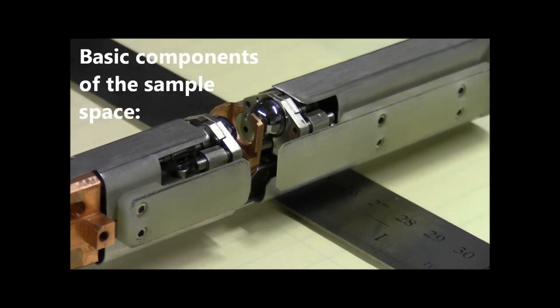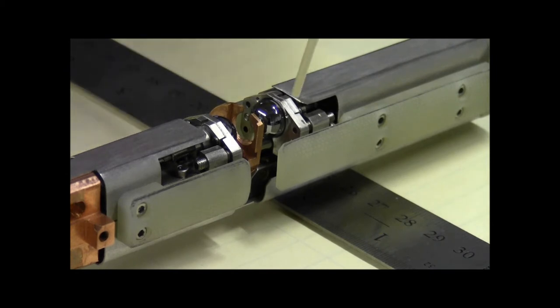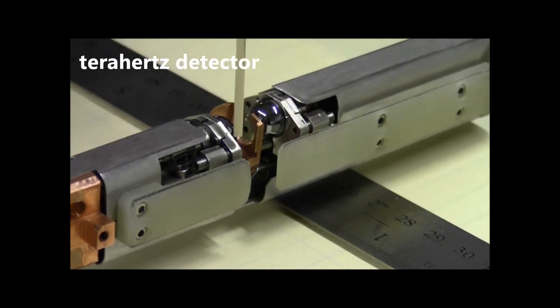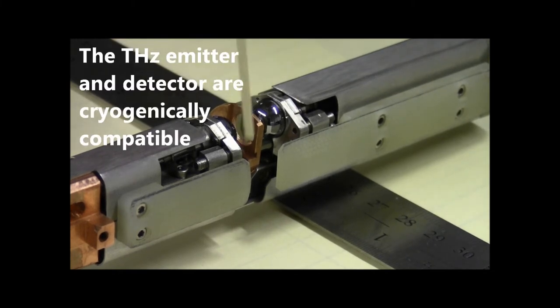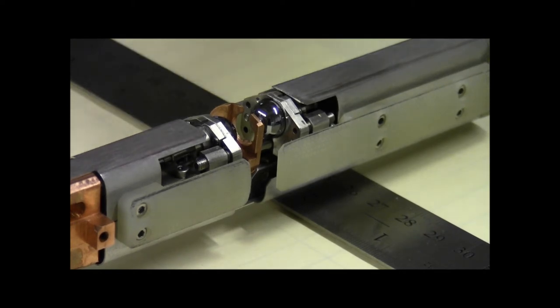The basic components you're going to see here are the terahertz emitter, the terahertz detector, and the sample tray. Terahertz frequency light is passed from the emitter through the sample to the detector for our transmission measurements. Both the emitter and the detector are cryogenically compatible, so they're sitting inside of a four kelvin to 300 kelvin flow cryostat. They need to be able to operate at those temperatures and in the nine tesla magnetic fields.